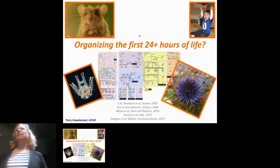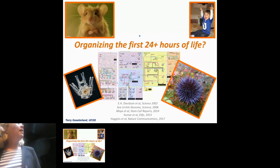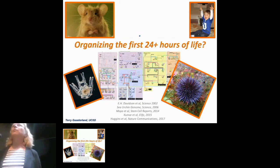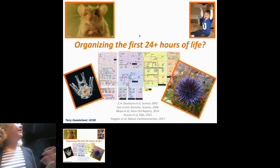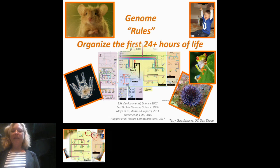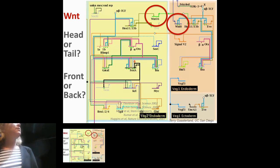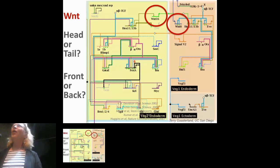Eric Davidson put together a network of all the regulatory interactions governing the first 24 hours of life of a sea urchin. That same network governs the equivalent period in a mouse or human. I started to drill down on this network asking where all the negative feedback loops were, and I realized that over and over again, the Wnt pathways encoded in this network involved these negative feedbacks.